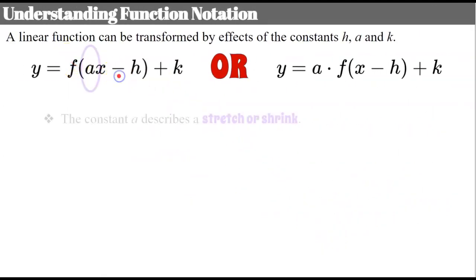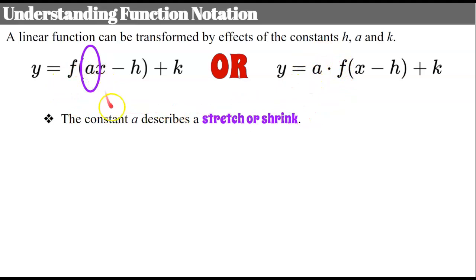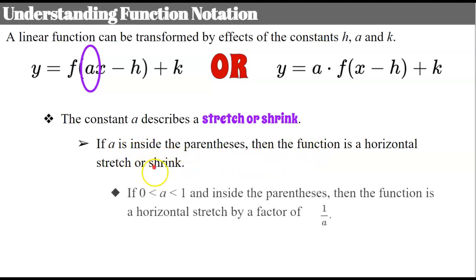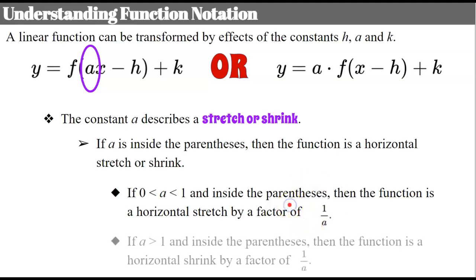Now let's move on to a. If a is inside the parentheses, that constant a describes a stretch or shrink — specifically a horizontal stretch or shrink. This one's very important: it's the reciprocal of what you would think. So if a is one half — between 0 and 1 and inside — then it's actually a stretch because the factor is the reciprocal. The reciprocal of one half is 2, making it a horizontal stretch by a factor of 2. If a were 2 — greater than 1 — the factor is the reciprocal one half, making it a horizontal shrink.